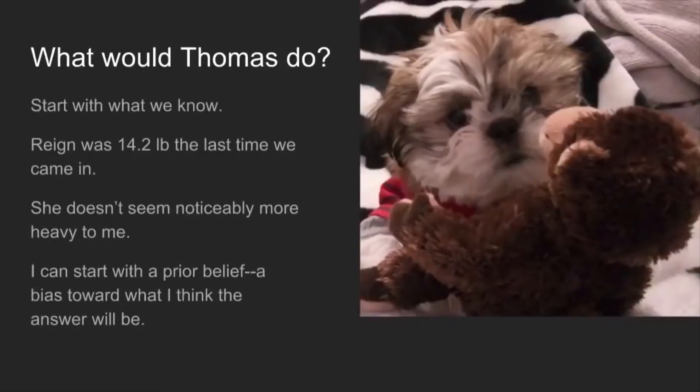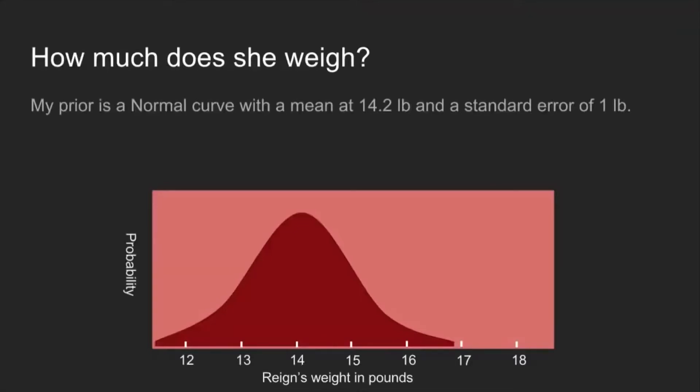So we've already established though that that's a really broad result and not helpful. So we need to start over now and let's start with what we know. So some background information. Rain was 14.2 pounds the last time we went into the vet, and she doesn't seem noticeably more heavy to me. My arm is not that well calibrated, but I'm going to assume that she's within about a pound of where she was before. So I take that prior and this is the form that it takes, a normal distribution centered on 14.2 pounds. You can see that most of that bulk is within plus or minus a pound and it extends a little bit further out. I allow for the possibility that she's actually gained a lot or lost a lot of weight, but probably she's pretty close. This is what I believe before I even put her on the scale.